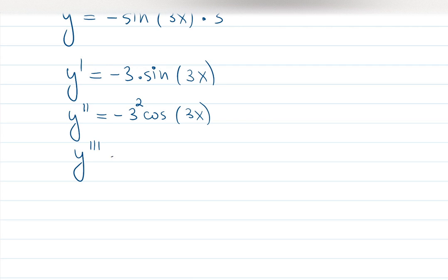The third derivative will be negative or positive. Let's see. Derivative of cosine will be negative sine. Sine and negative in front will become positive. So I will have 3. One more three will pop out at the end. So it's going to be 3 cubed sine of 3x.